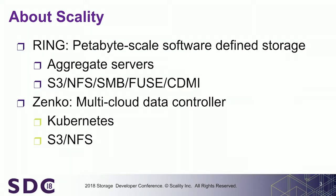Maybe you know Scality. We currently have two products. We have Scality Ring, which is a petabyte-scale software-defined storage solution. We aggregate commodity servers into a large pool of storage and support various file and object storage protocols. We have a new product called Zenko, a multi-cloud data controller which allows you to move your data from your Ring to the cloud. It's based upon Kubernetes and also supports S3 and FS.